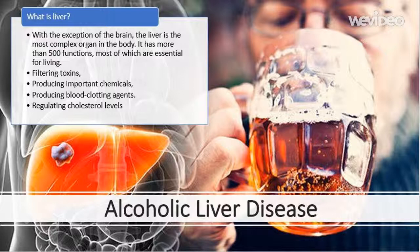The functions of the liver include filtering toxins from the blood, producing important chemicals such as proteins and hormones, producing blood clotting agents that prevent excessive bleeding, and regulating cholesterol levels in the blood.